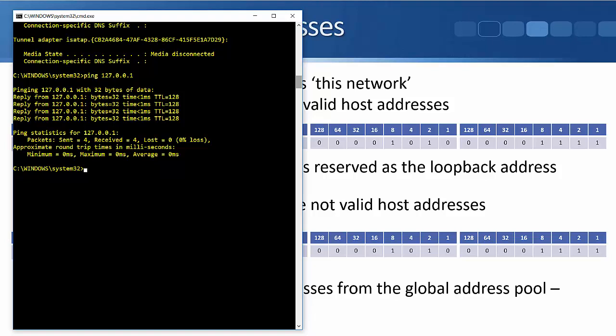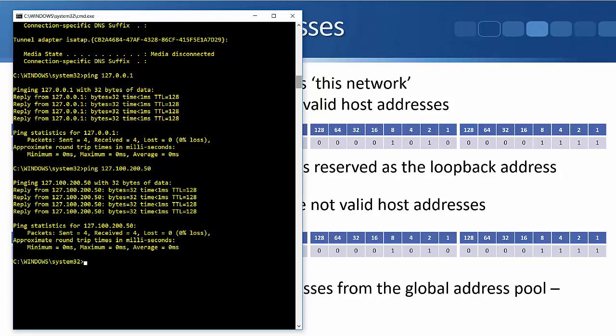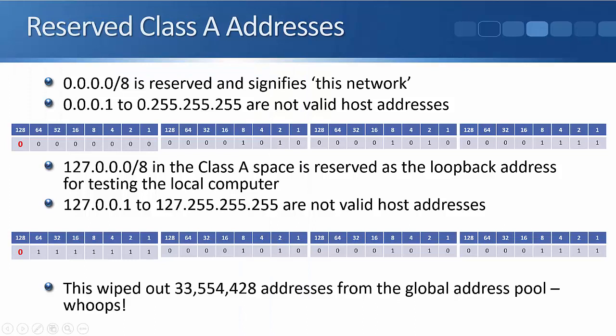It's the entire class A range beginning with 127 that is actually reserved for testing loopback. So I don't have to ping 127.0.0.1 — I could ping 127.100.200.50 and this is going to work as well. I can ping anything beginning with 127 and it's going to check the local TCP/IP stack. It's good to have that address for testing, but not so good that they took out an entire class A network for it.